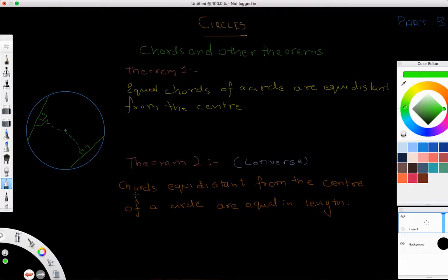Let's take its converse: chords equidistant from the center of a circle are equal in length. So let's take a case where we have points O, A, B, C, D, E, and F. Given OF and OE are equal,